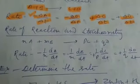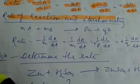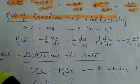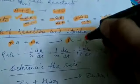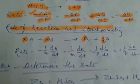Now, rate of reaction and stoichiometry of reaction. Consider the reaction nA plus mB equal to pC plus qD. Now N, M, P, and Q are the stoichiometric coefficients by which the reaction is balanced.